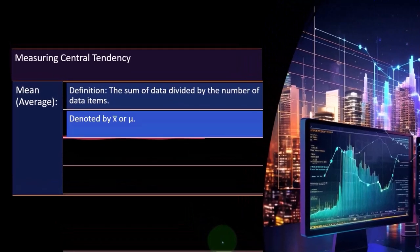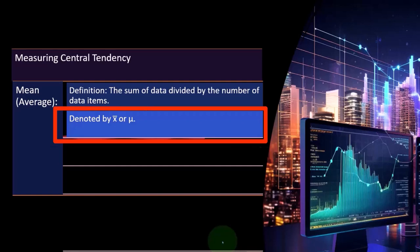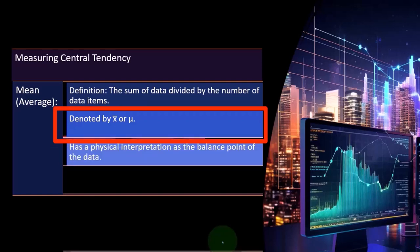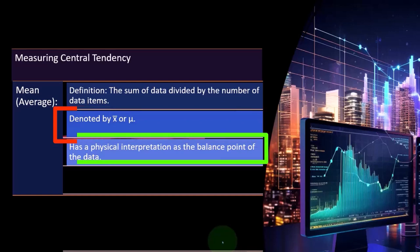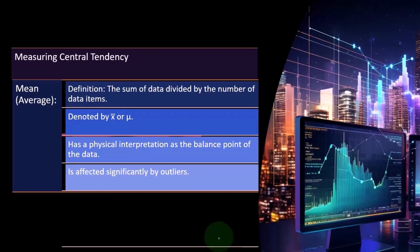It's often denoted by an X bar on top, the X with a bar on top, or a mu, which looks like a U. It's the Greek letter mu. It has a physical interpretation as the balance point of the data. So if we were to look at a histogram and put a fulcrum under it and balance the data on it like a teeter-totter, the mean is that balancing point.